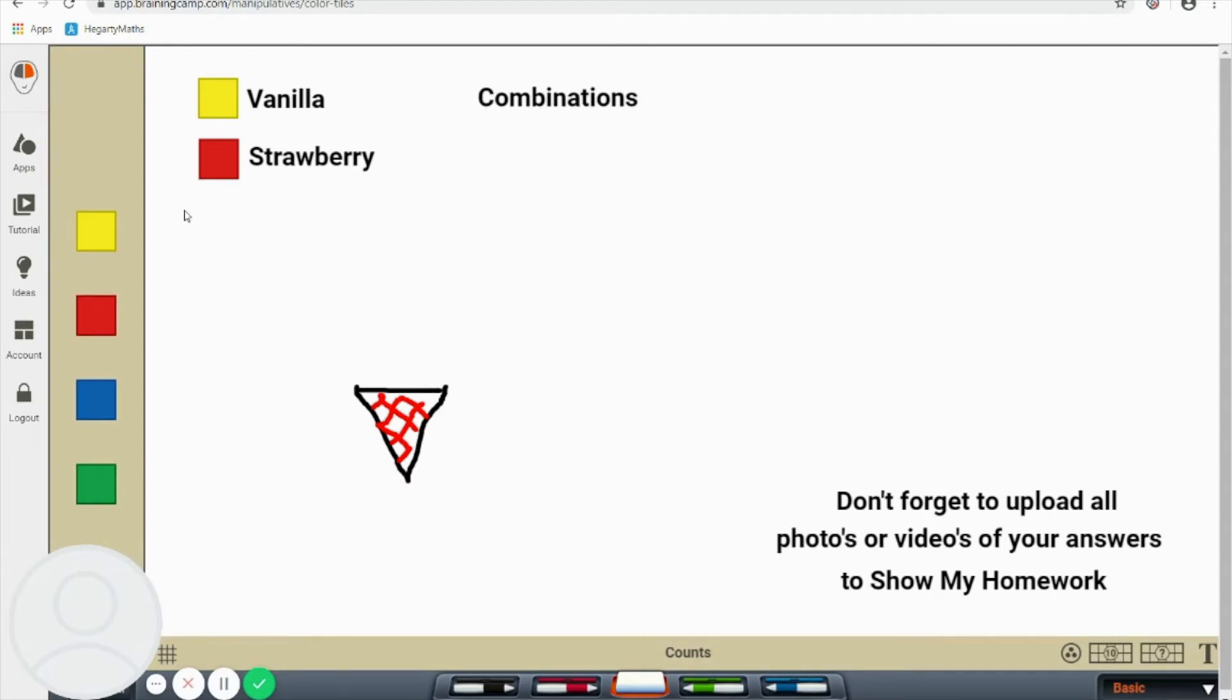Here's the problem. So my local ice cream shop has two flavours of ice cream, which is vanilla and strawberry, and they sold ice creams with only two scoops. Only allowed two scoops. So I could have a scoop of vanilla and a scoop of vanilla. That's fine. And that is one combination.